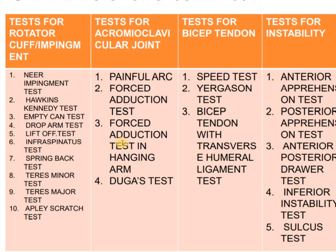For AC joint problems, you will see the painful arc sign, the force reduction test, and the cross-body adduction test. For biceps tendon, three tests are used: the Speed test, Yergason test, and biceps tendon with transhumeral ligament test. For shoulder instability: the anterior apprehension test, posterior apprehension test, posterior drawer test, and for inferior instability, the sulcus sign.